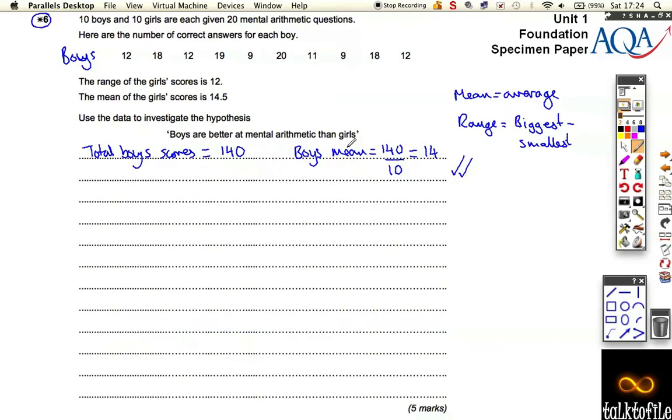And if we look at the range for the boys, well, that's equal to the biggest score take away the smallest score. Someone scored 20, that was the biggest score, and the lowest score was 9. So I've got to do 20 take away 9, which is 11, which means that's how spread out the information was. From the lowest to the highest score for the boys, there was a gap of 11.